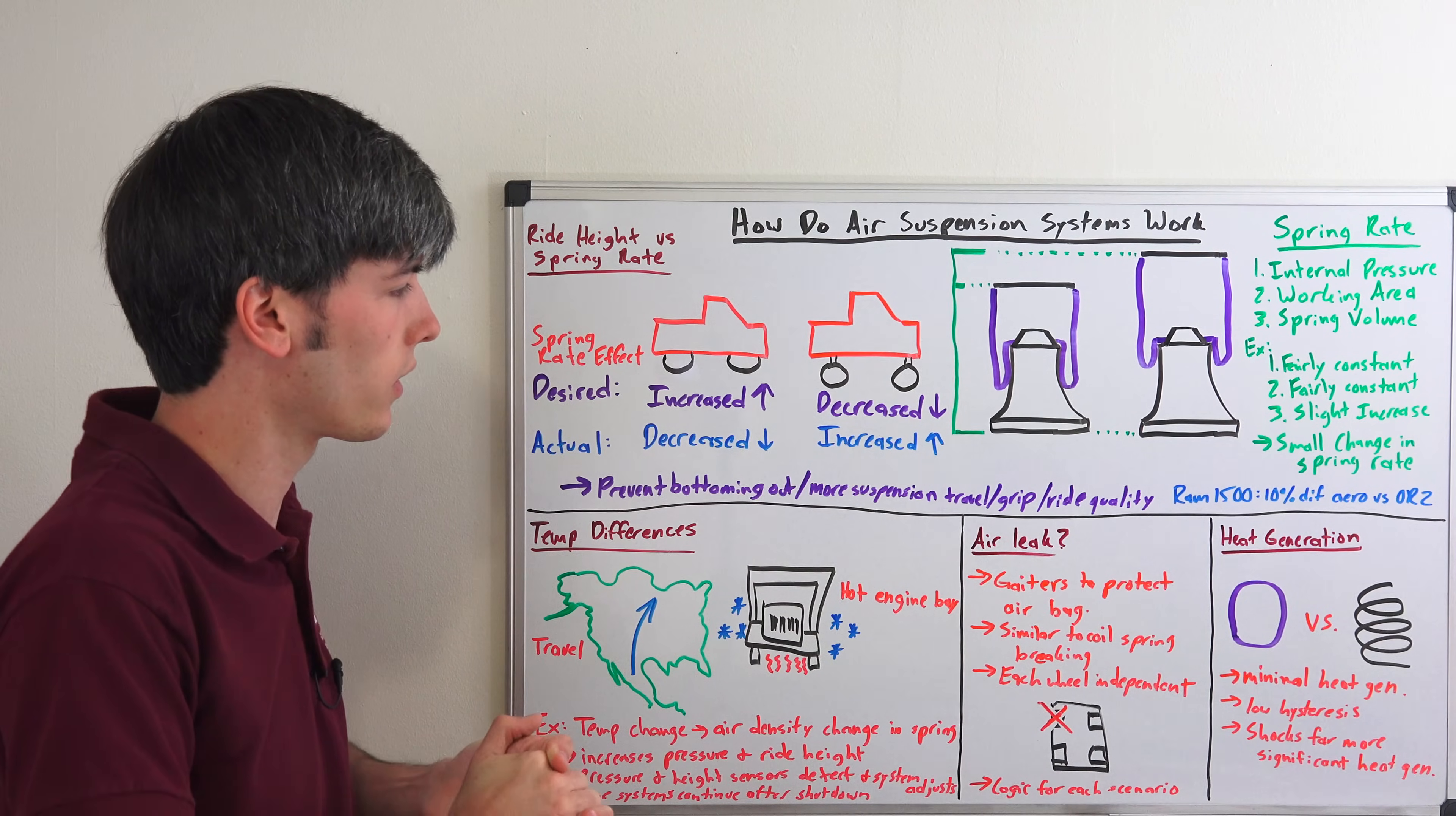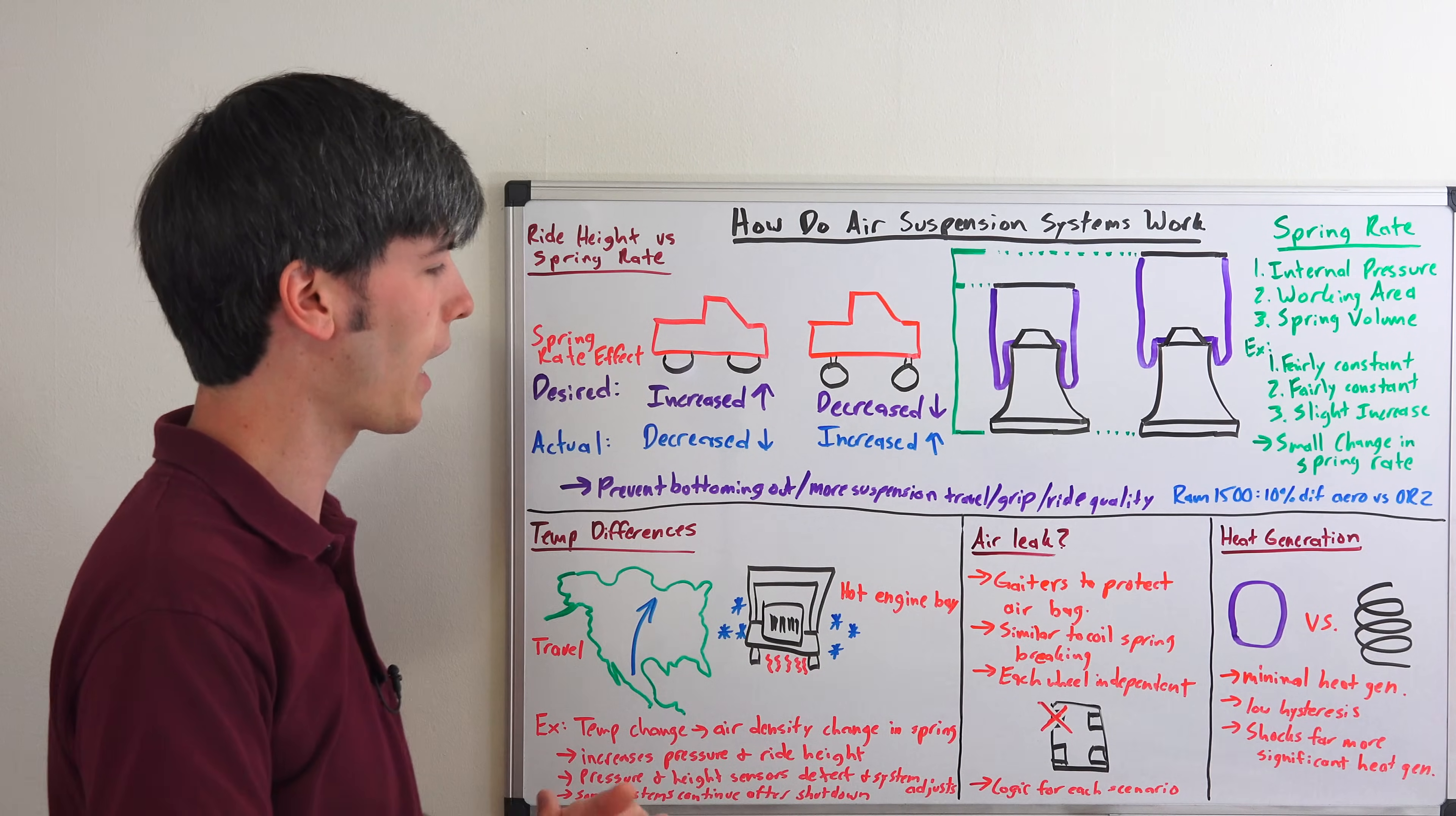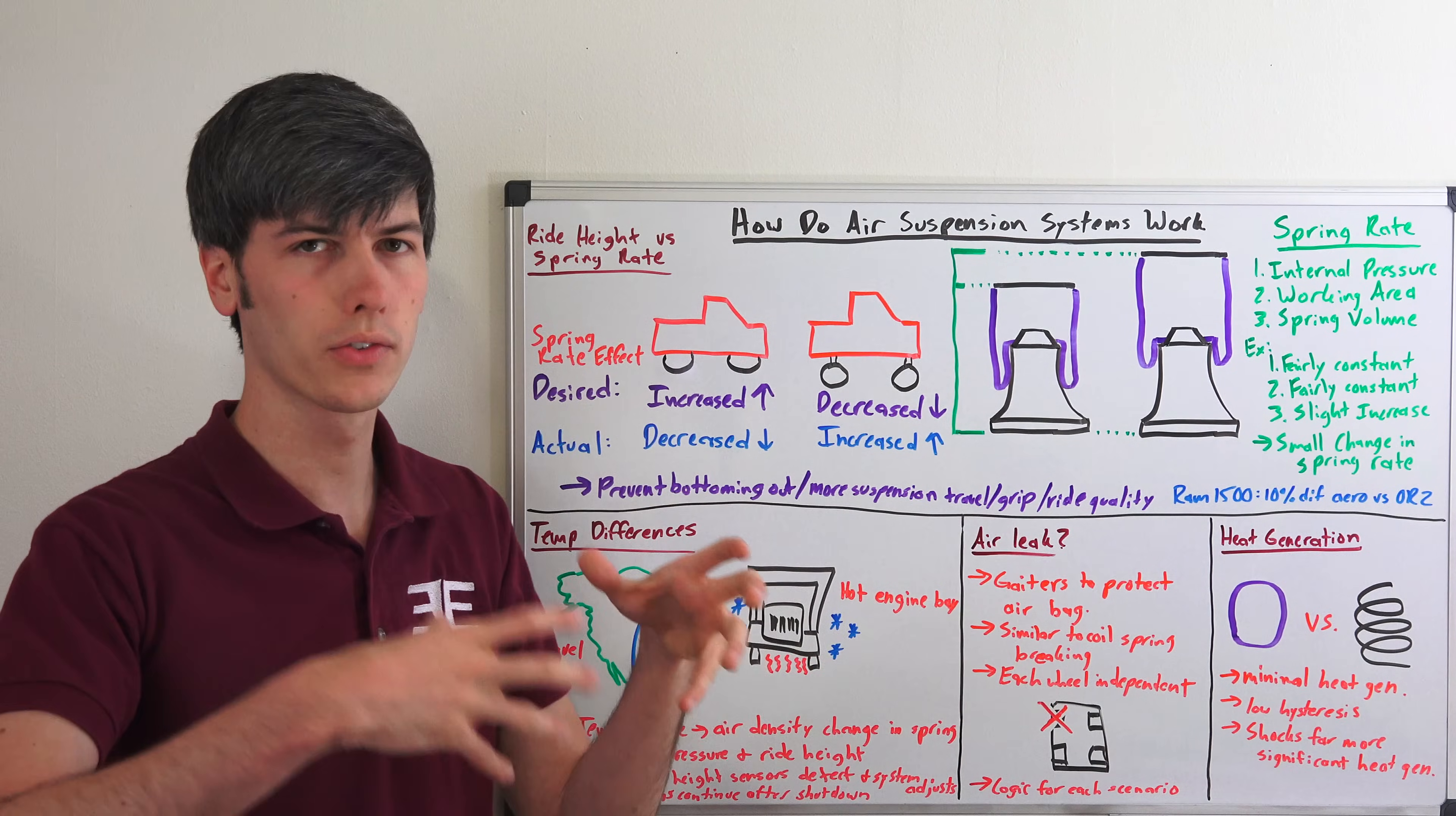Now moving on, our next question is what if we damage one of these air springs? What if for example we were to have a puncture in one of our air springs? I should mention for example like the Ram 1500 they have gaiters in place to protect the airbags, but certainly anything can happen. So it's a very similar scenario than if a coil spring were to break.